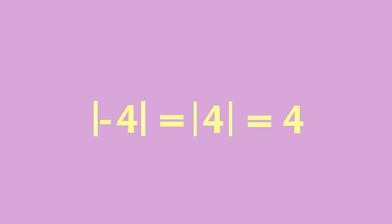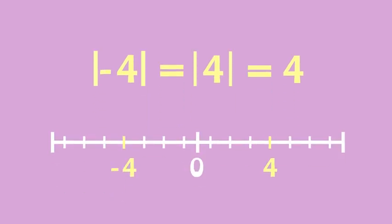Absolute value is always a positive number, because it's the distance from the other number, in this case zero, no matter the direction.